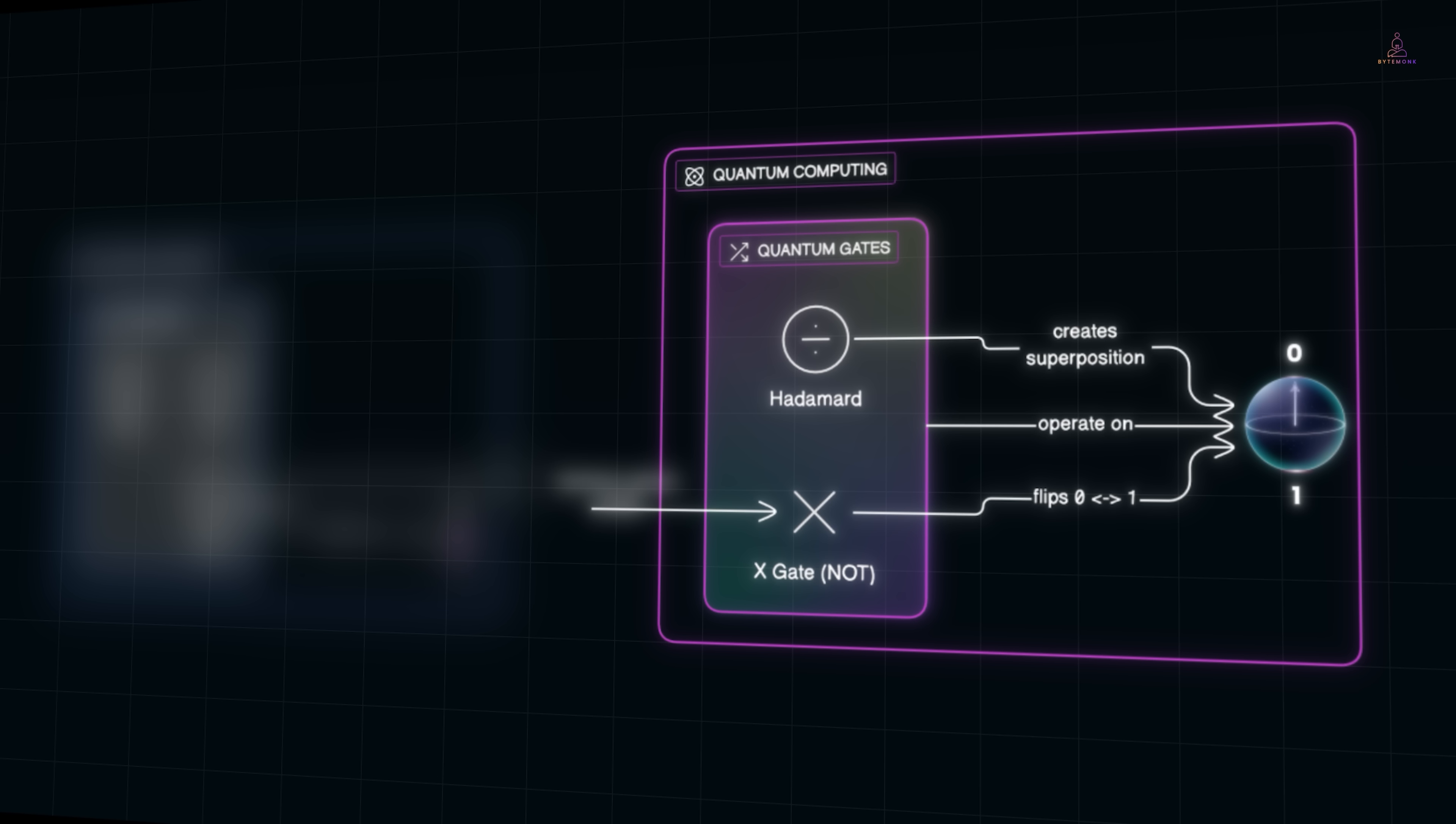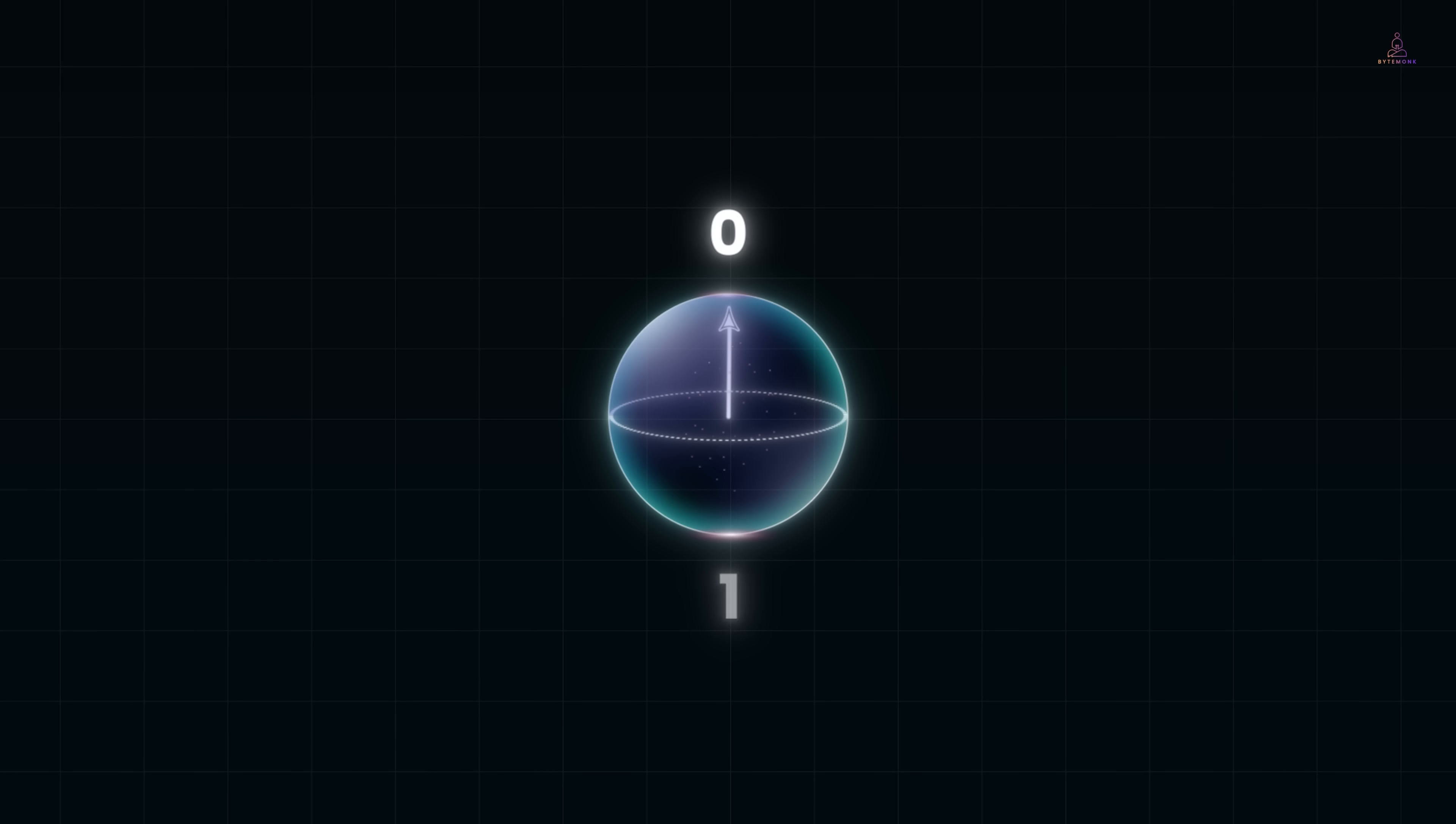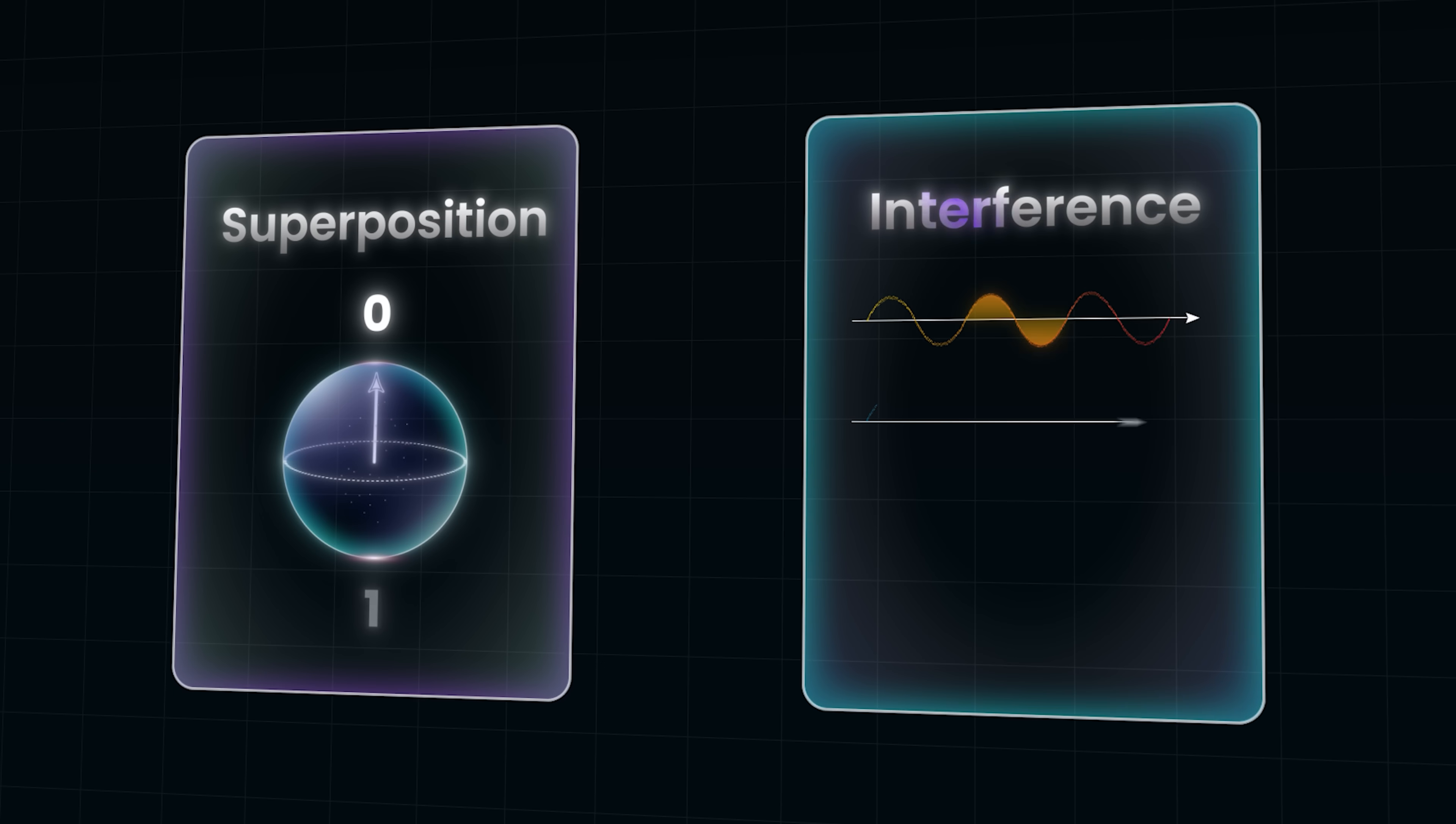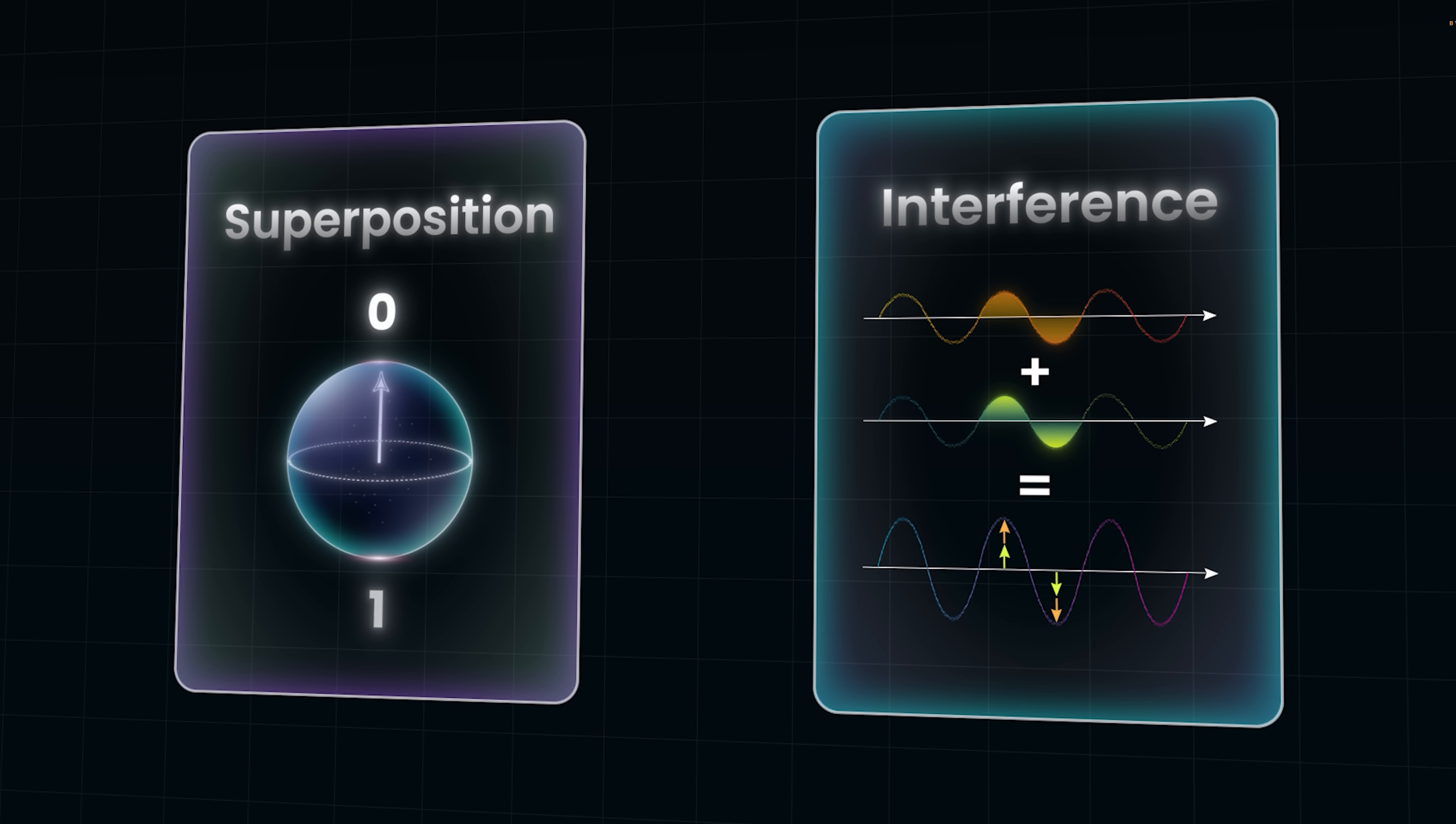Now that we know what qubits are and how we can nudge them around with gates, let's see what we can actually do with them. And this is where quantum algorithms come in. Classical algorithms solve problems step by step, one possibility at a time. Quantum algorithms take advantage of superposition and interference to explore many possibilities in parallel, then cancel out the wrong ones and highlight the right answer.